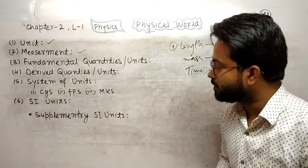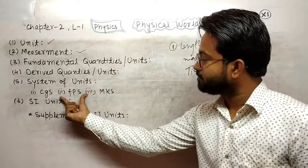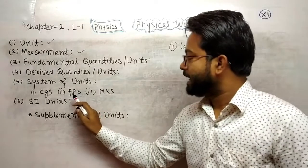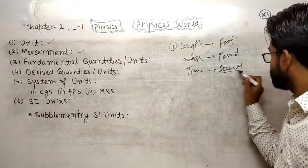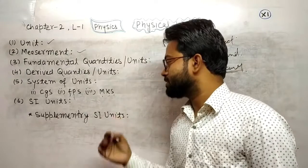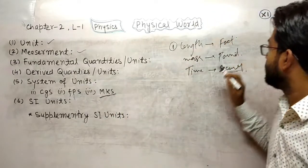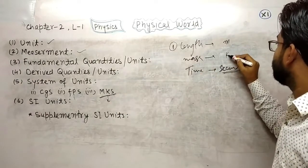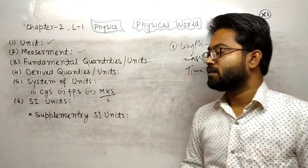The second system is FPS — foot, pound, second. This is used by the British. In this system, length is measured in foot or feet, mass in pound, and time in second. Third is MKS, used by Indians, French, and Americans — meter, kilogram, second. In MKS, length is in meter, mass is in kilogram, and time is in second. These are the systems of units used by different countries.